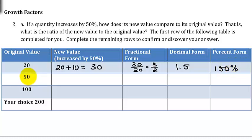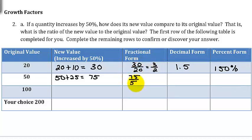With an original value of 50, half of 50 is 25, so the new value is 50 plus 25, or 75. The fraction form is 75 over 50. Since 25 divides both 75 and 50, it reduces down to 3 halves — again 1.5 and 150%.